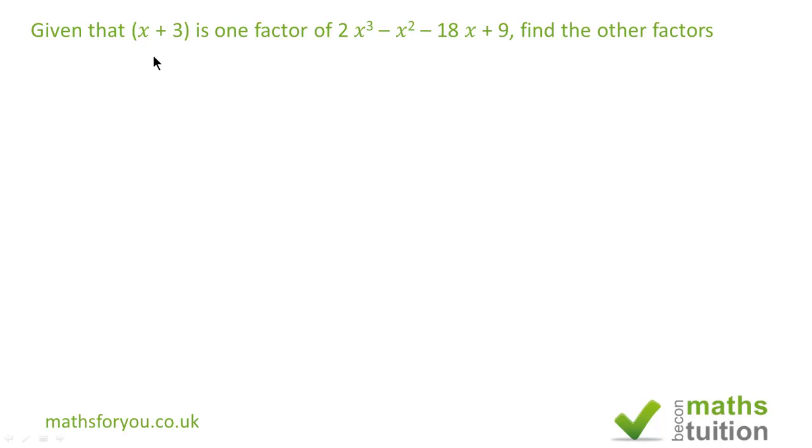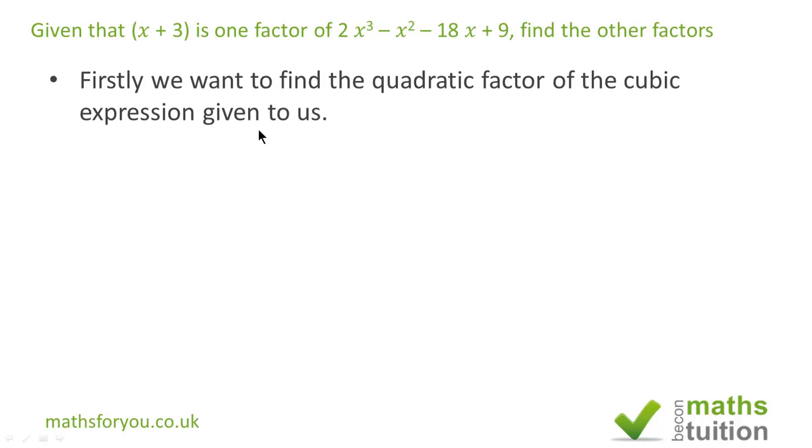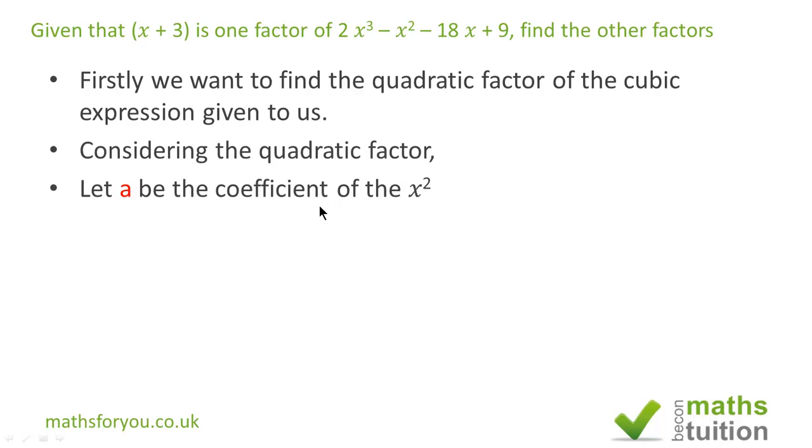Firstly we know a linear factor, so we need a quadratic factor in order to produce a cubic function. To get this quadratic factor we say let a be the coefficient of x squared and b be the coefficient of x in this quadratic factor, and let c be the constant in this quadratic factor.